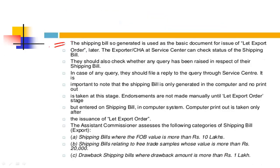The shipping bill so generated is used as a basic document for issue of the Let Export Order. After that, the exporter/CHA at the service center can check the status of the shipping bill and whether any query has been raised; in case of any query they should reply through the service center. It is important to note that the shipping bill is only generated in the computer and no printout is taken at this stage — endorsements are not made manually until the Let Export Order is given, and computer printout is taken only after issuance of the Let Export Order.